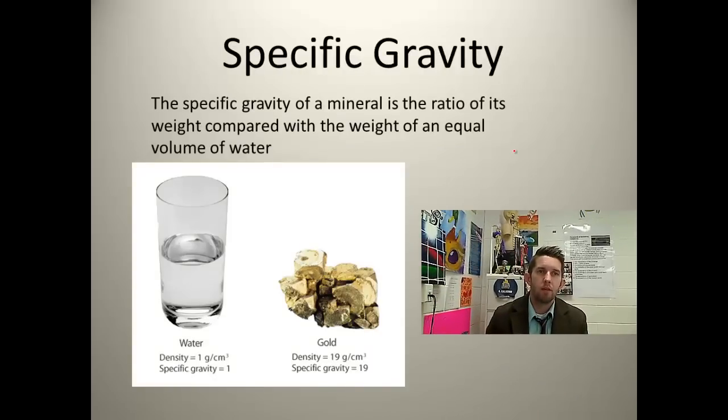Specific gravity has to do with its density. By definition, it says the specific gravity of a mineral is the ratio of its weight compared with the weight of an equal volume of water. So if we have this much volume of water and we have an equal volume of gold, the gold will weigh 19 times as much as the water. Water, by definition, has a specific gravity of 1.